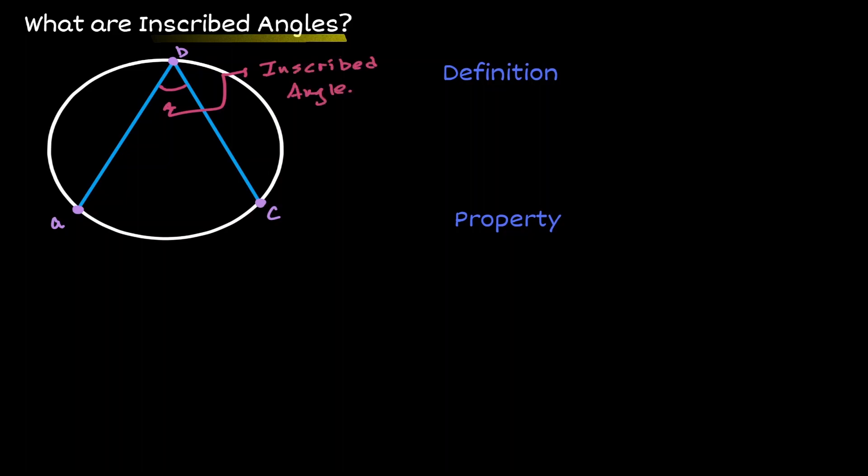So by definition, we can say that an inscribed angle is an angle that is created by two chords, where the vertex of this angle is in the circumference of the circle.